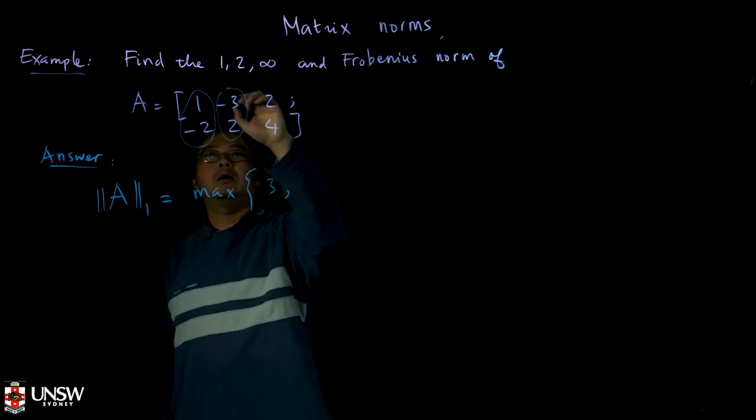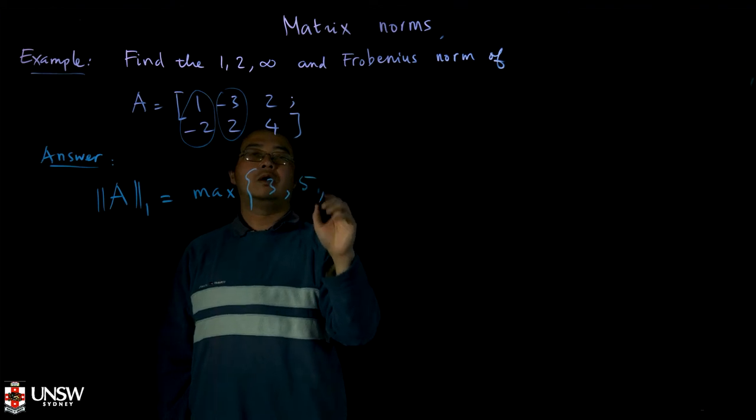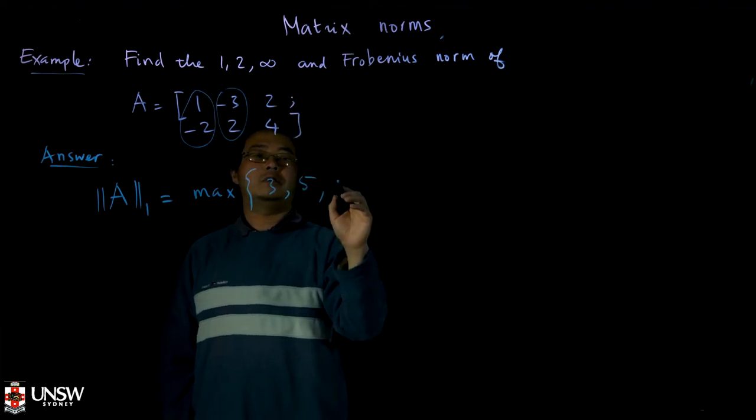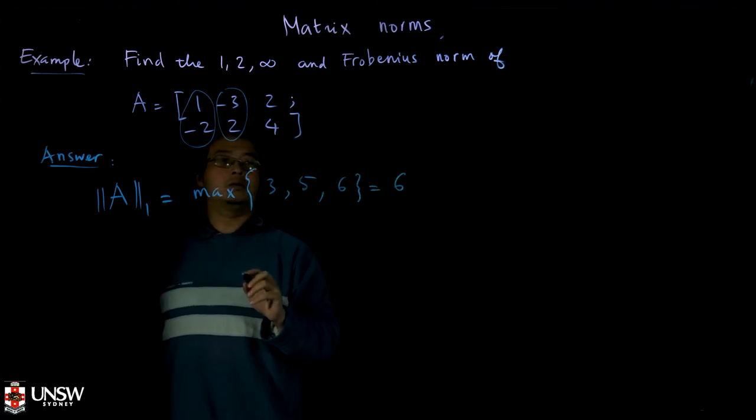And the second column will be in absolute value, the sum will be 5. And the absolute value of the third column is 6. So then the 1 norm of A equals 6.